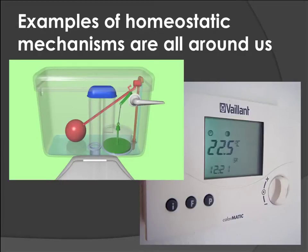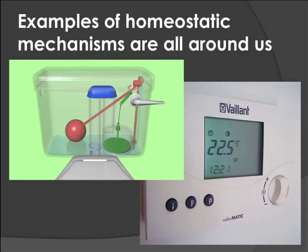Basically, when you flush the toilet, it empties out. This is called a ball cistern — it's like a ball that has air in it. As the water level drops, this drops down too, triggering a mechanism that opens a tap to fill the cistern back up. As the ball floats on top of the water, it rises back up, and when the water reaches the set point level, the ball system stops more water from coming in. Homeostasis happening in your bathroom.